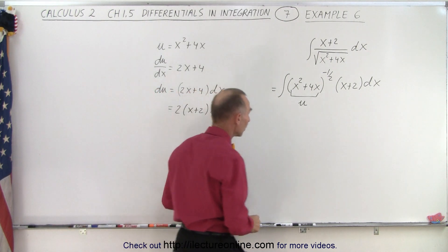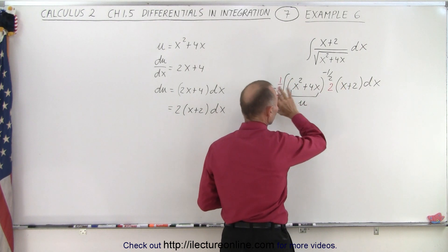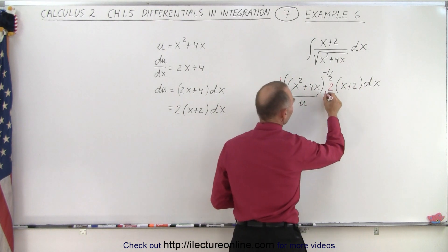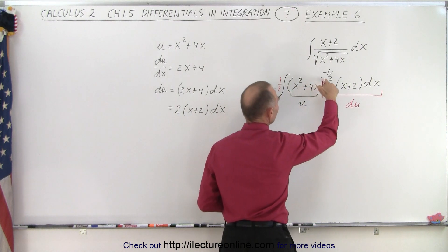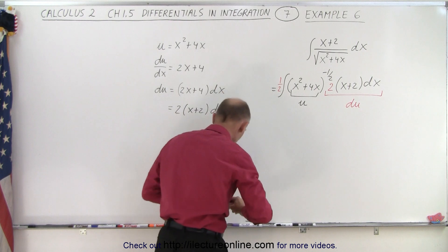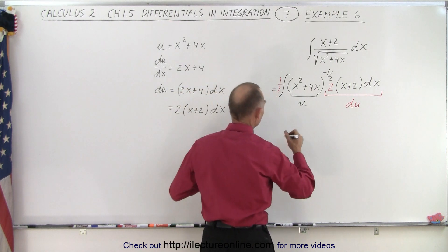That means we need to multiply this times 2 and then also divide by 2 so we don't change anything. And now we have our proper differential du here, so now we have u to the minus one half du, so we can integrate that. And you don't have to do the u integral; we can simply write it like this.